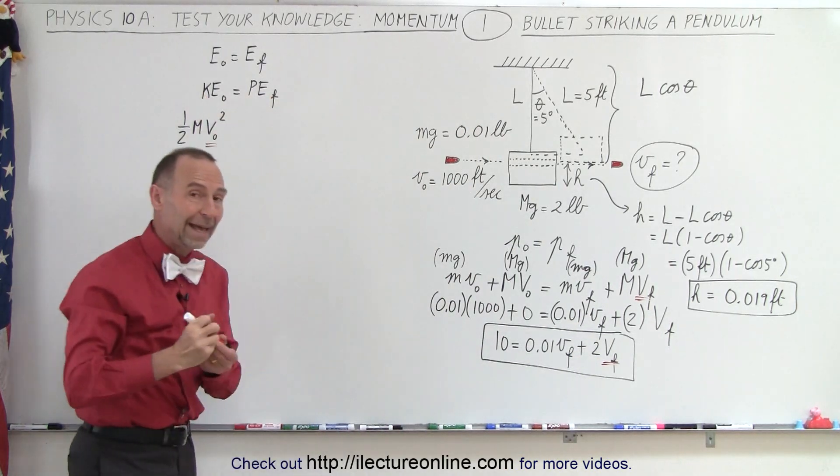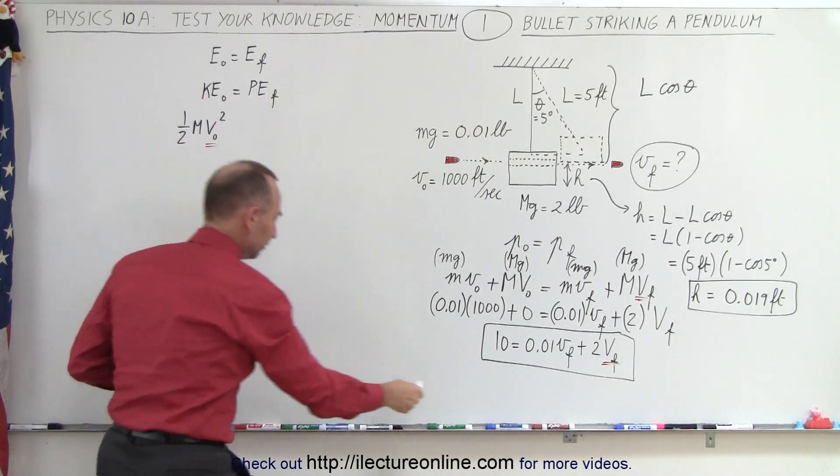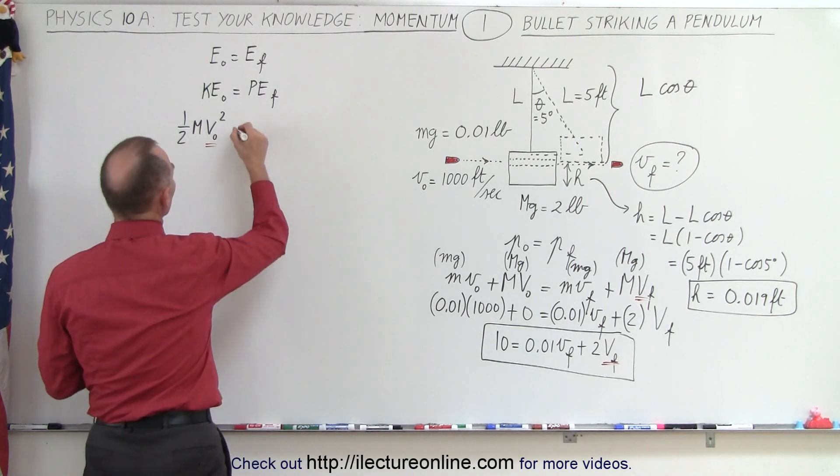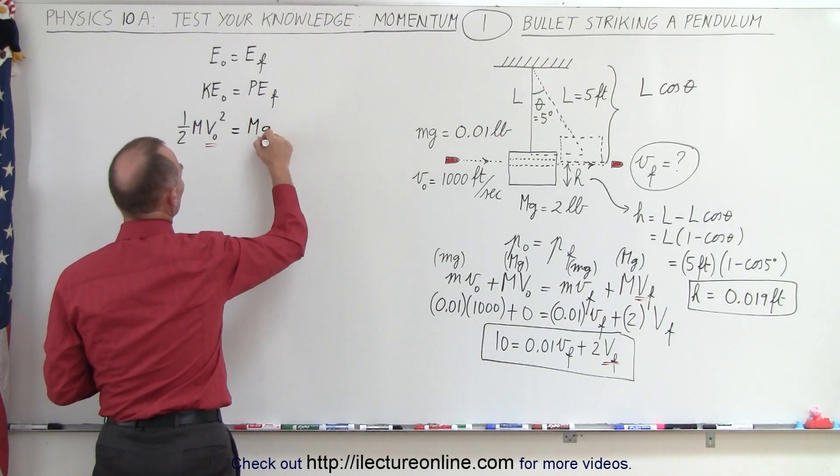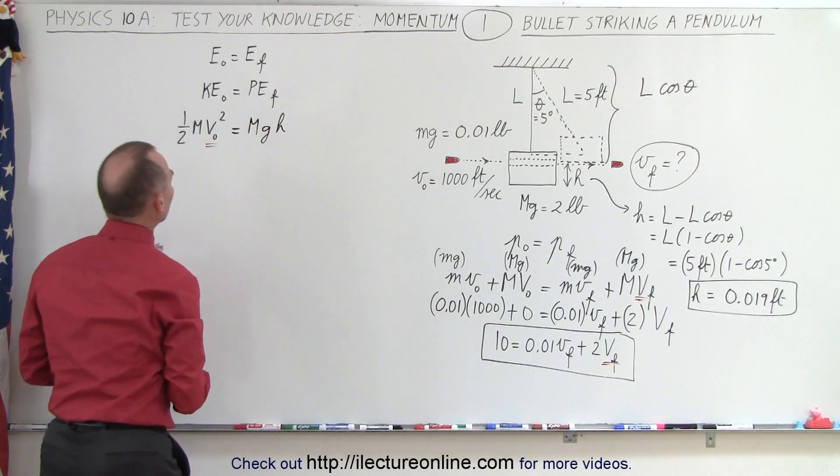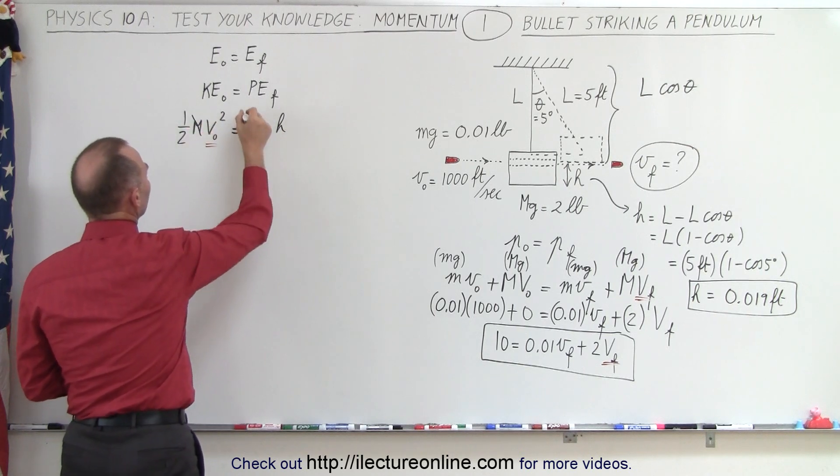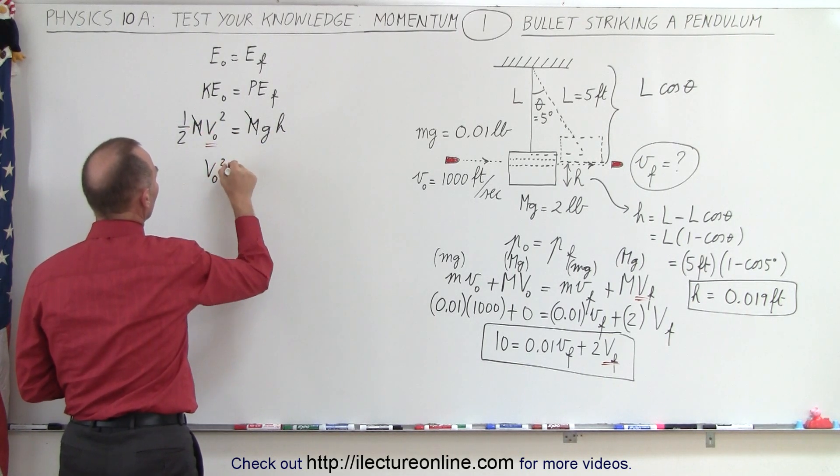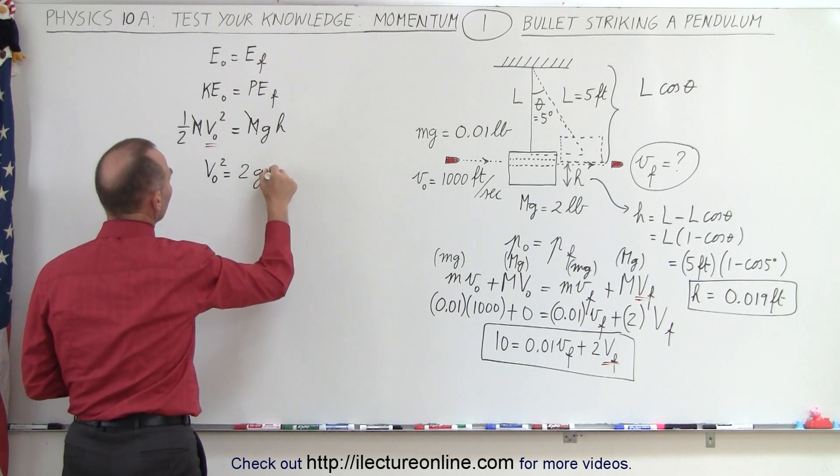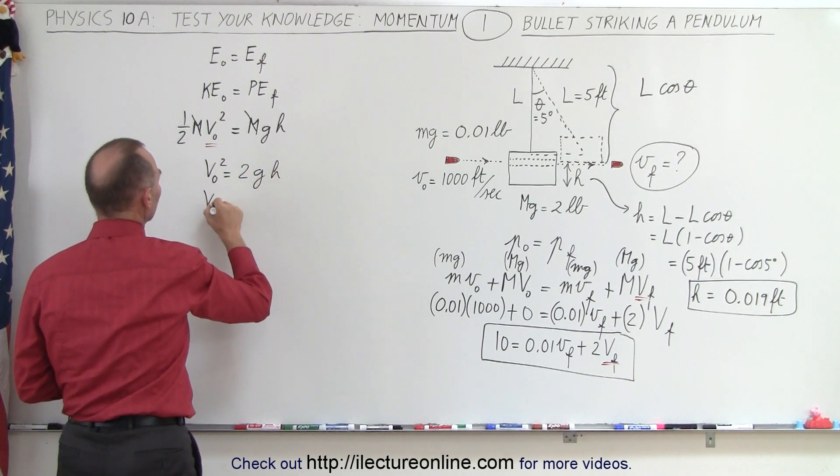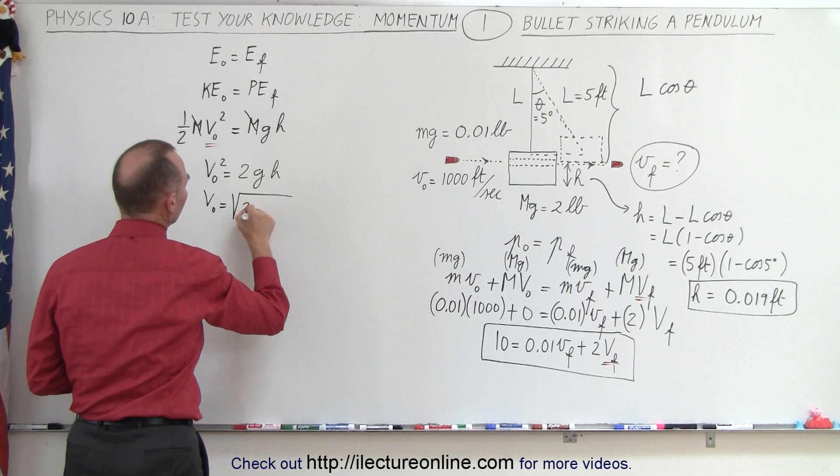That equals mgh. Notice that the m's cancel on both sides, and I can say that V initial squared equals 2gh, or V initial equals the square root of 2gh, which by now should look pretty familiar.